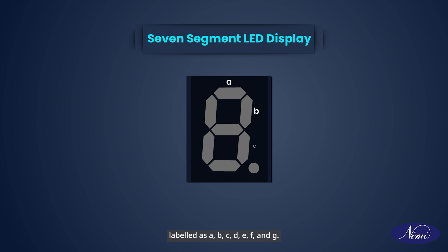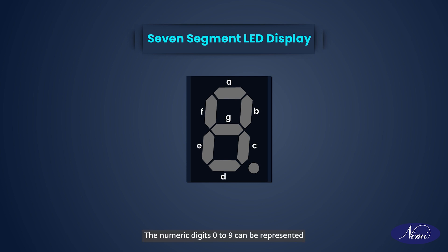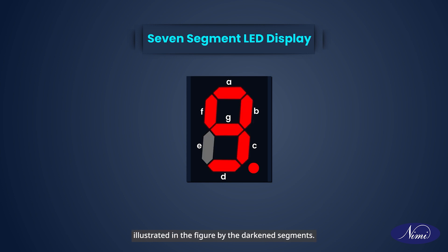The segments in these display devices are labeled as A, B, C, D, E, F, and G. The numeric digits 0 to 9 can be represented by illuminating the appropriate segments, as illustrated in the figure by the darkened segments.